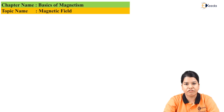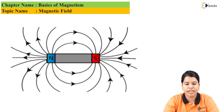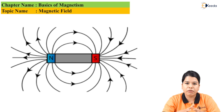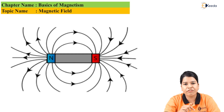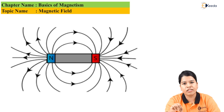Magnetic field: the area around a magnet in which its influence is noticeable is called the magnetic field. To determine this magnetic field, an experiment is done. If we place a magnet and scatter iron filings around it, we can see that the filings align themselves in a particular loop, forming a curved loop from one pole to the other.